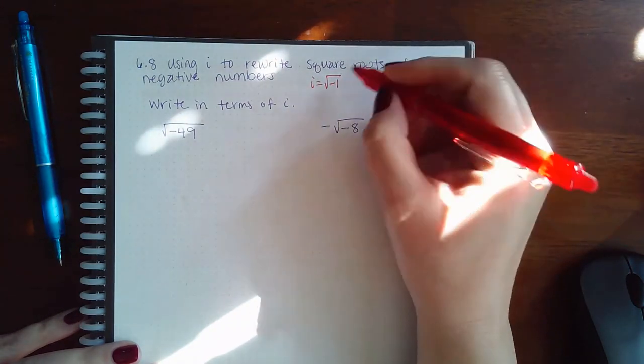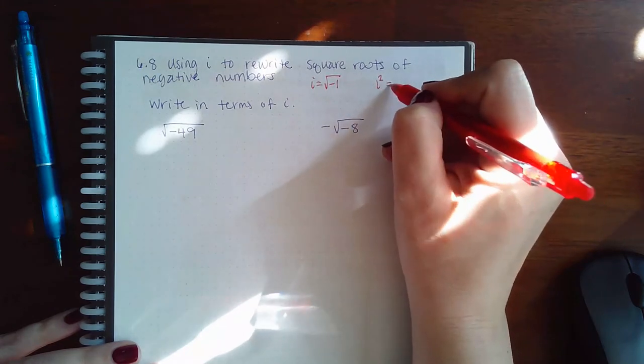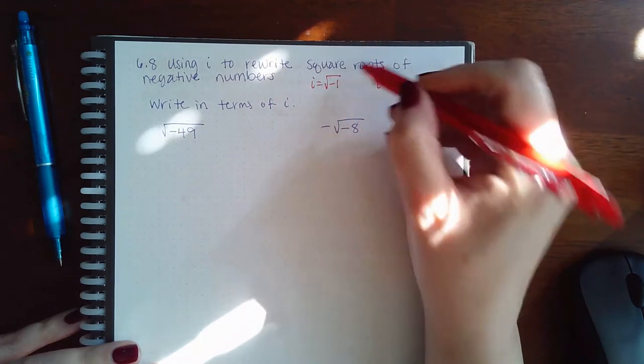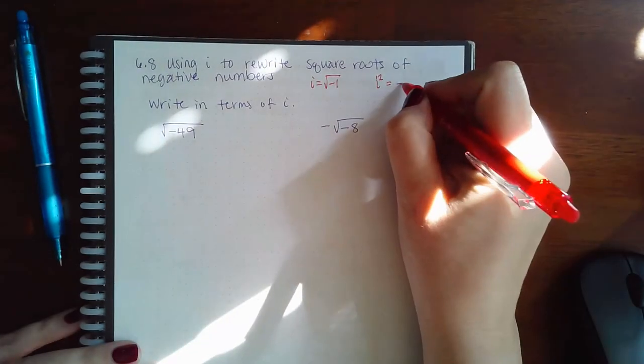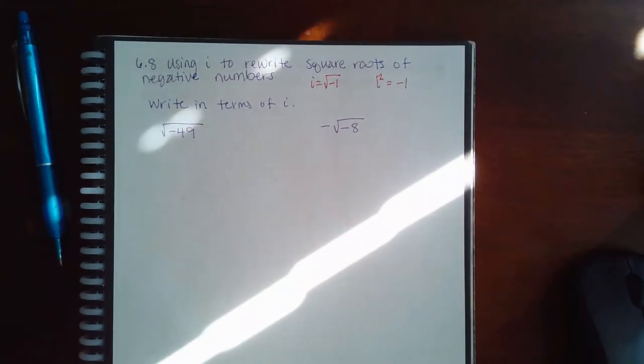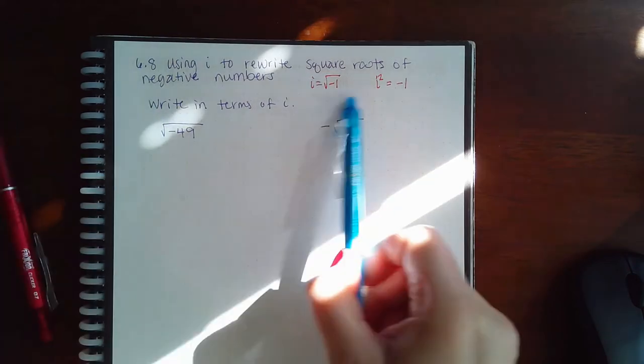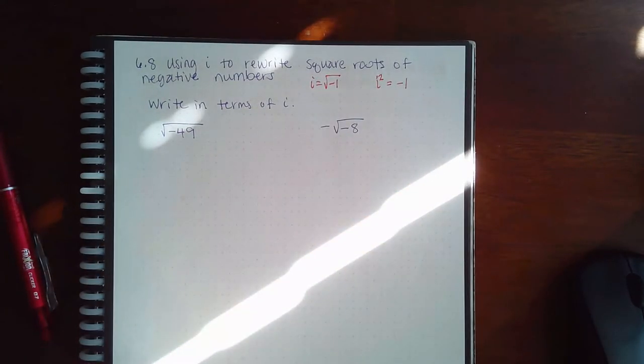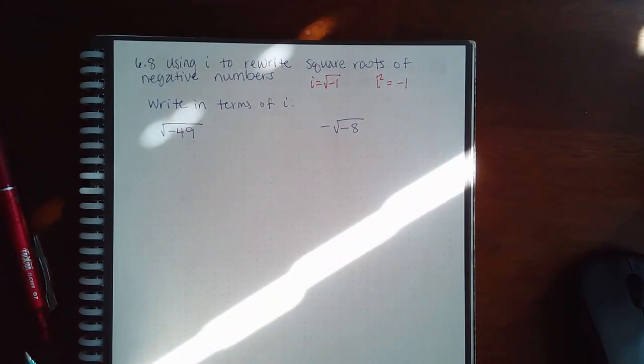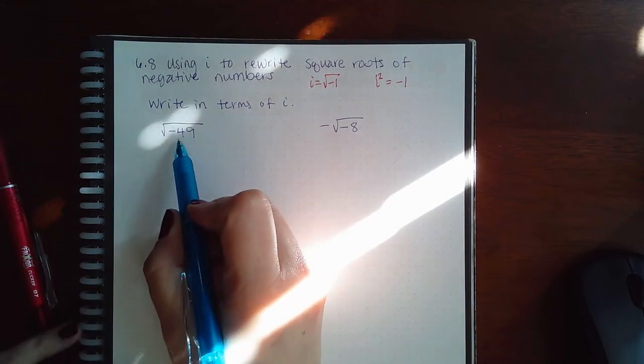And because of that, if I were to square this side I get i squared, and if I were to square this side that would undo the square root and so I would just have negative one. So these are basically the two parts of the definition of i: i itself equals the square root of negative one, and i squared equals just negative one. We need to remember these pieces. If you don't remember it, you definitely need to have it on your note sheet. It's very important.